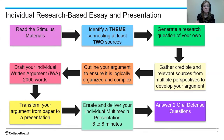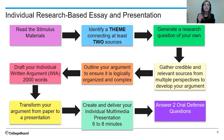After you have those sources, you will then outline your argument — plan it out to make sure it's logically organized and complex. Make sure you also know how you're going to use the stimulus material within your argument. Once you have that plan — your main claim or thesis, your reasons and support, evidence and commentary — you will then draft your individual written argument. This paper will be approximately 2,000 words with a 10% overage or underage allowance in order to make that complex and organized argument.